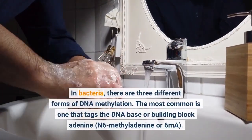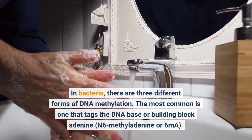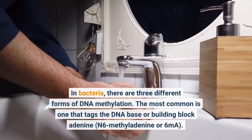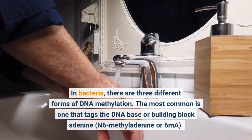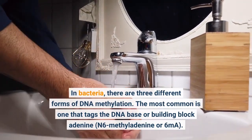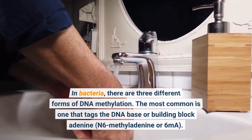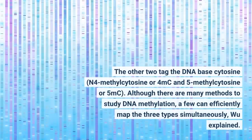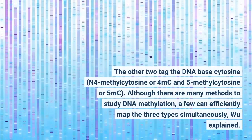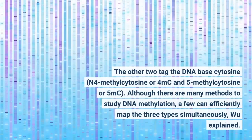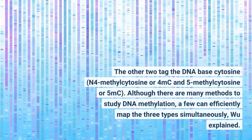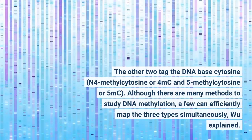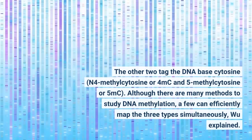In bacteria, there are three different forms of DNA methylation. The most common is one that tags the DNA base adenine — N6-methyladenine, or 6mA. The other two tag the DNA base cytosine: N4-methylcytosine, or 4mC, and 5-methylcytosine, or 5mC. Although there are many methods to study DNA methylation, few can efficiently map the three types simultaneously, Wu explained.